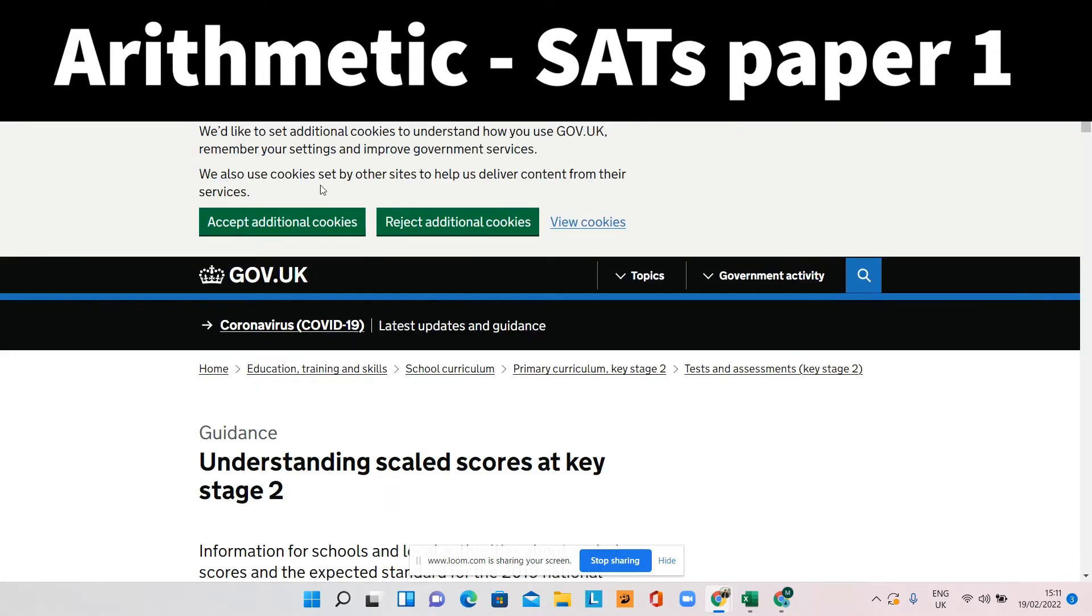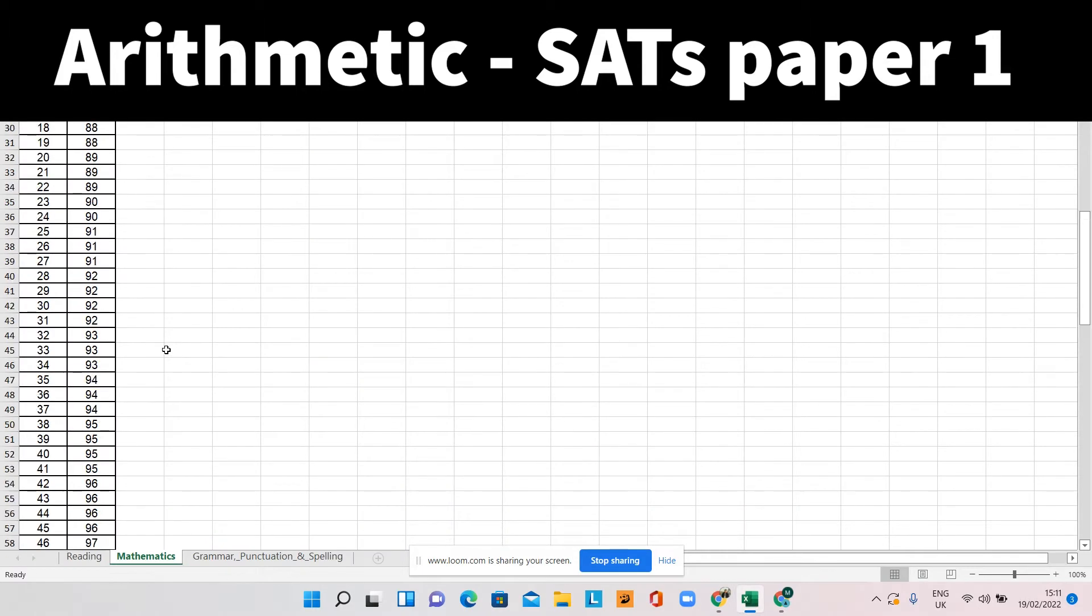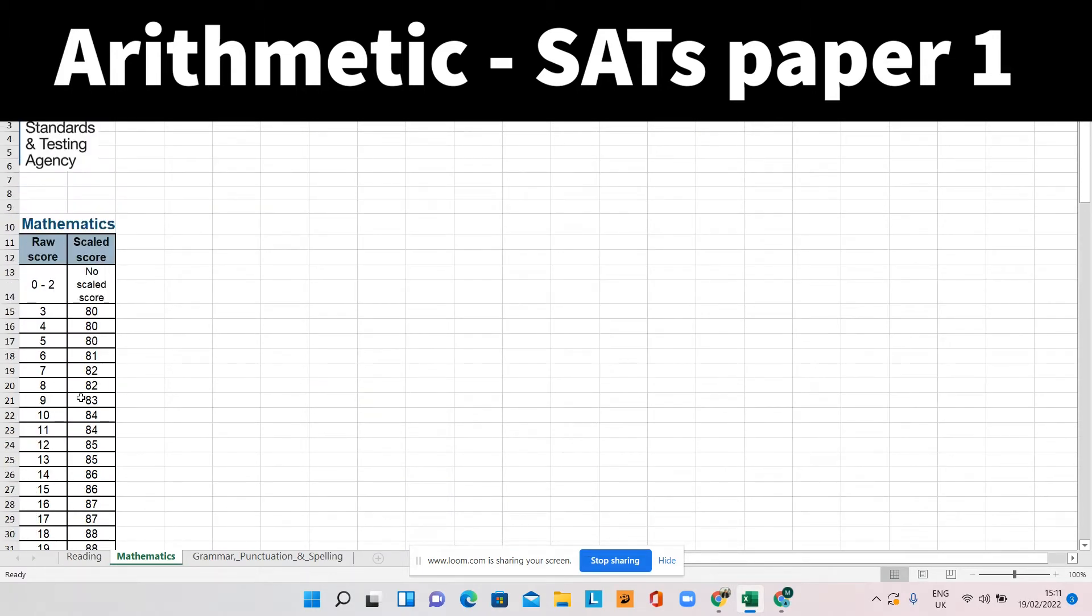Which means that over the course of three papers, I just bring up this, which the government will send out once the test is done, the children get a raw score, which is how much they scored across all three papers, 35, 35 and 40 being the maximum scores.